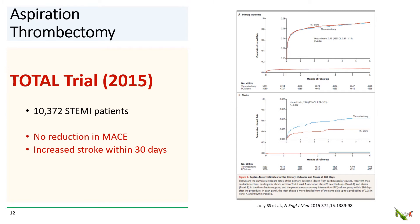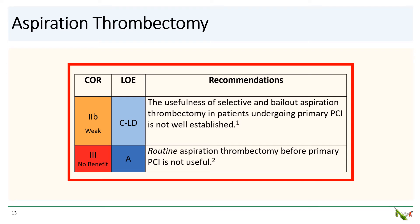Evidence for this comes from the TOTAL trial published in 2015. There were several smaller aspiration thrombectomy trials prior to this, but TOTAL is viewed as the definitive aspiration thrombectomy trial. In TOTAL, 10,372 STEMI patients were randomized to aspiration thrombectomy versus PCI alone. The punchline was that there was no difference in MACE between the two groups, and ominously, there was a significant increase in stroke within 30 days in the thrombectomy group. So routine aspiration thrombectomy before primary PCI earns a Class III no-benefit recommendation. Bailout aspiration thrombectomy in select cases has a weak Class IIb recommendation, and its utility is still not well established.